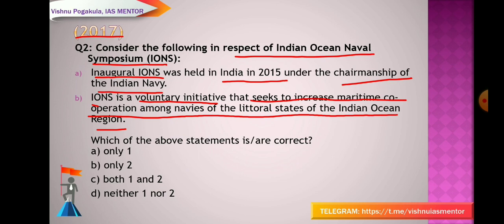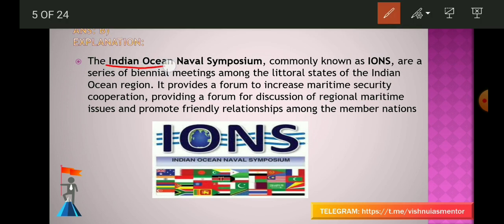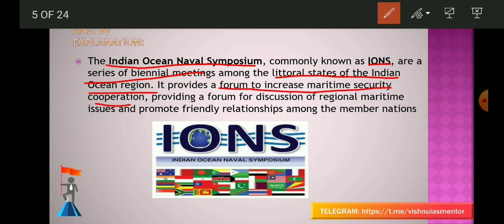The answer is B, that is only 2. The second statement is correct — IONS is a voluntary initiative that seeks to increase maritime cooperation among the navies of the littoral states of the Indian Ocean. 'Littoral states' refers to regions lying along a shore. IONS is a series of bi-annual meetings among the littoral states, provides a forum for maritime security cooperation, discussion of regional maritime issues, and promotes friendly relationships among member nations.